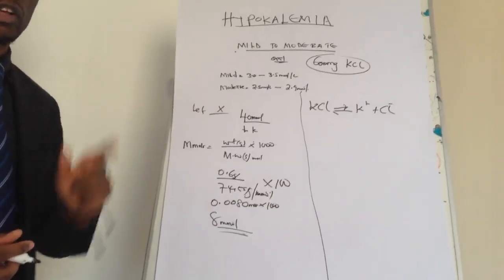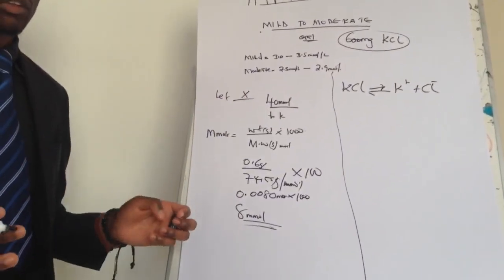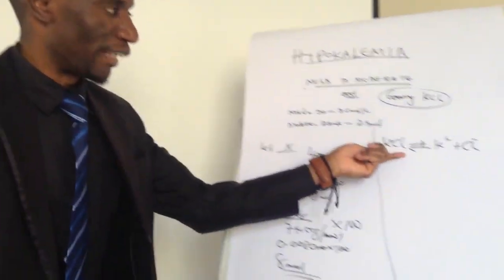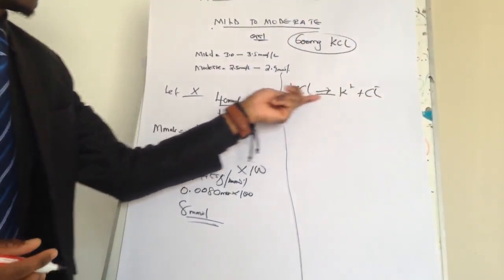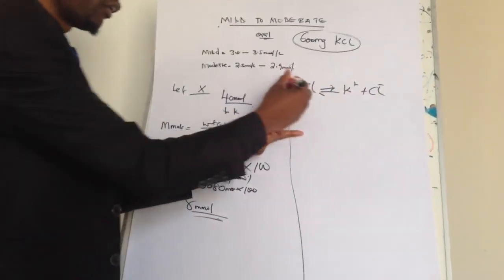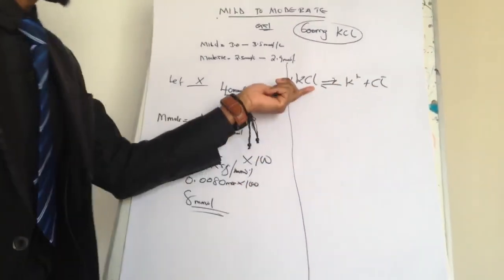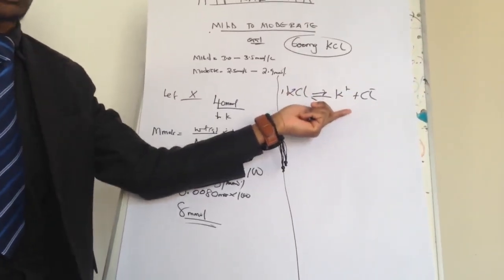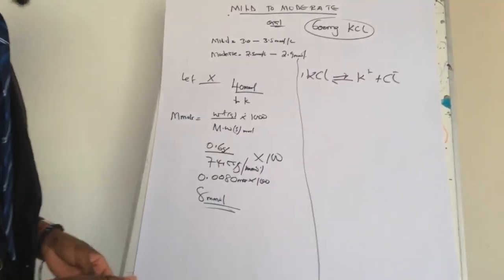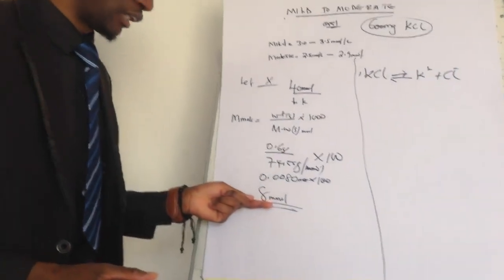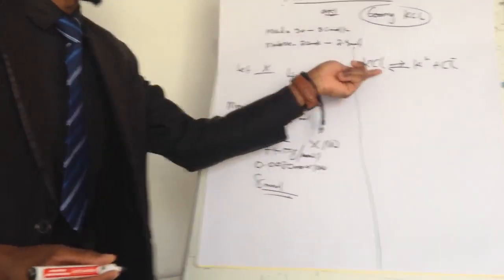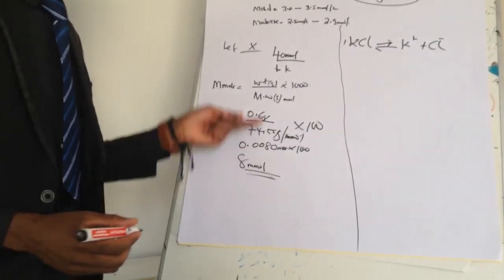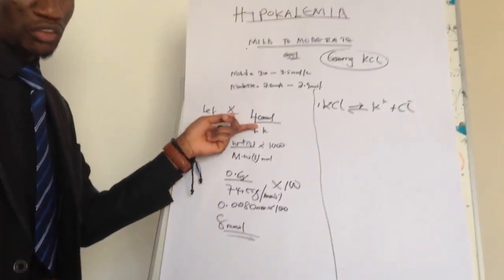Potassium chloride dissociates into potassium and chloride ions. Looking at the balanced equation, the ratio is 1:1 — one mole of potassium chloride yields one mole of potassium. So the number of millimoles of potassium in one tablet is the same: 8 millimoles. The doctor prescribed 40 millimoles.